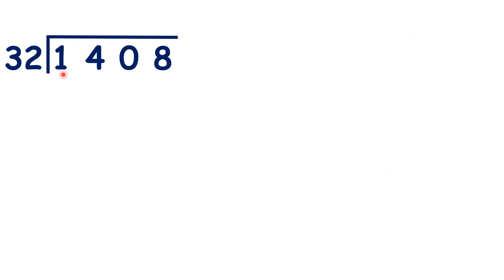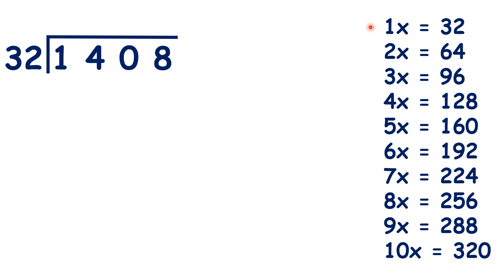Pause the video and see if you can use the same method to divide 1408 by 32. We'll need to use our 32 times table, and if we take the first 2 digits, we have 14, which is less than 32. So let's take the first 3 digits all in one go, and work out 140 divided by 32.